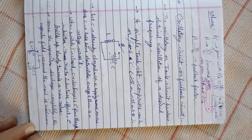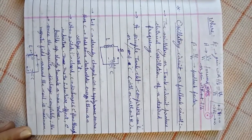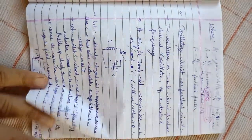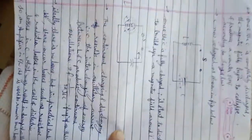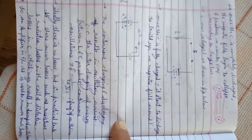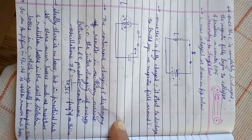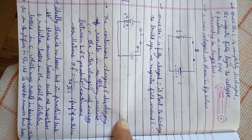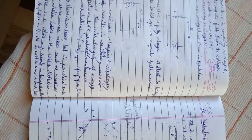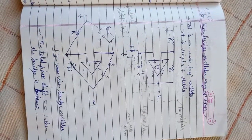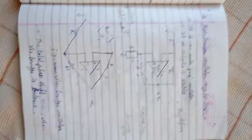एक tank circuit का example लिया है और इसकी working बताते हैं। यह charging और discharging concept पर काम करता है। Now we start Wien bridge oscillator using operational amplifier.